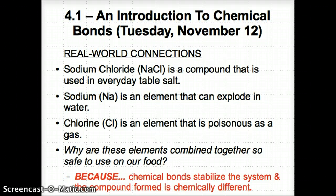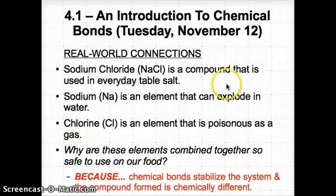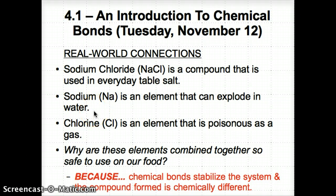For example, we all know about the compound sodium chloride, or NaCl, commonly known as table salt. We can use it on different foods like steaks, burgers, or even fries. But if we look at the elements individually — sodium (Na) and chlorine (Cl) — we'll see that they can be very reactive and even potentially very dangerous. Sodium (Na) is an element that can actually explode in water, and chlorine (Cl) is a very poisonous gas.